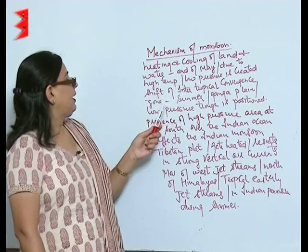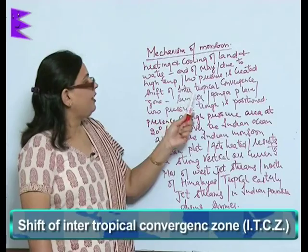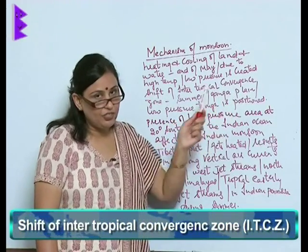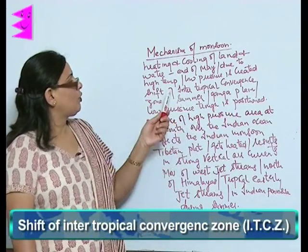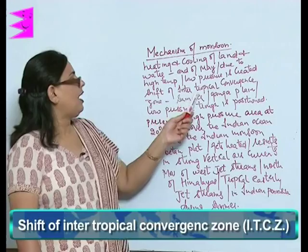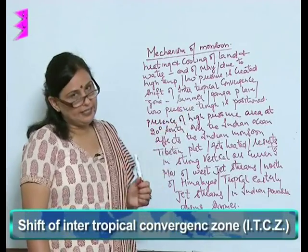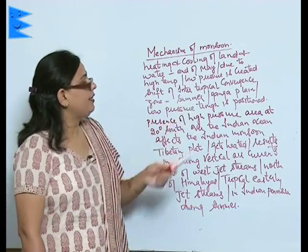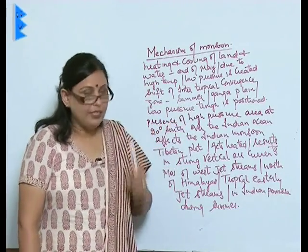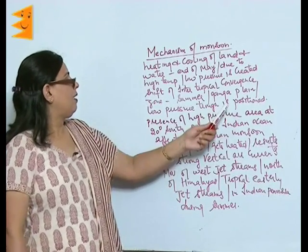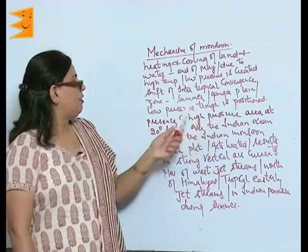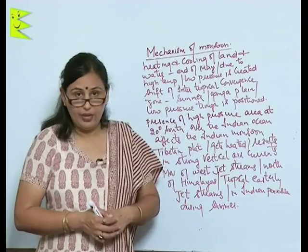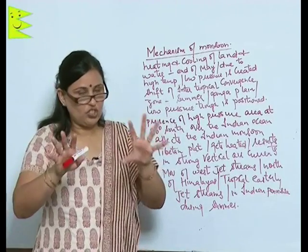Next is the shift of the Intertropical Convergence Zone, also called the ITCZ. This is experienced in summer in the Ganga plains, where the low pressure trough is positioned.